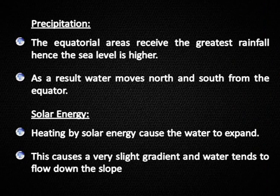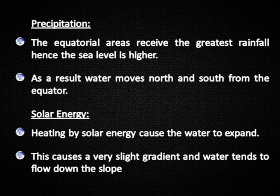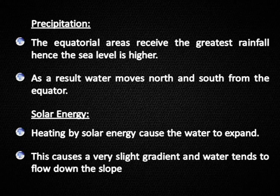Precipitation: Equatorial areas receive the greatest rainfall, hence the sea level is higher there; as a result, water moves north and south from the equator. Solar energy: Heating by solar energy causes water to expand, creating a very slight gradient, and water tends to flow down the slope.